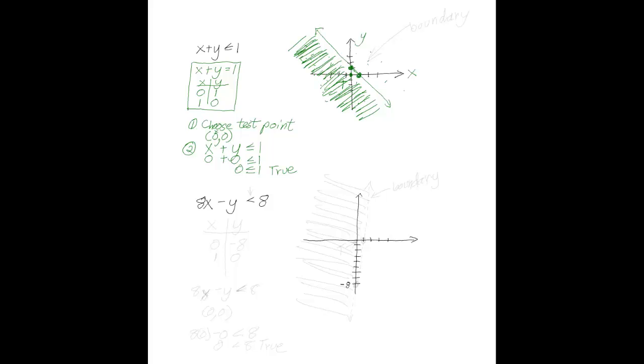Now, let's look at the linear inequality in two variables below. Again, rather than changing this to y equals format, I'm going to use an x and y table just because it's really easier to do that. For instance, if x is 0, y is going to be negative 8. And if y is 0, x will be 1.